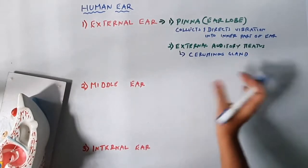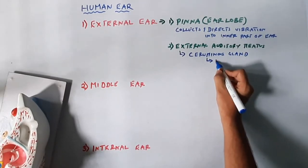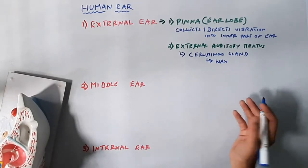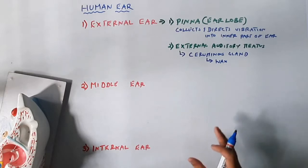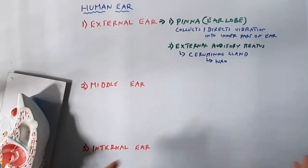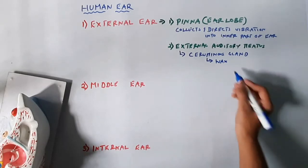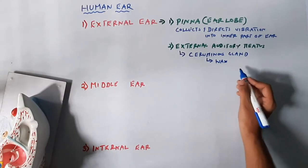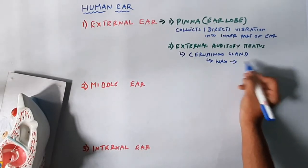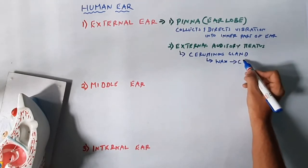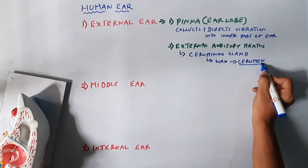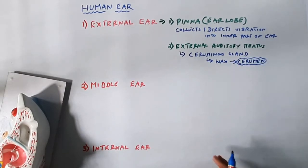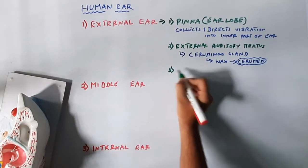Those glands are called ceruminous glands. The ceruminous glands produce ear wax, whose biological name is cerumen. The function of ear wax is protection — for example, if a tiny insect tries to enter the ear, the wax traps it, preventing it from reaching the inner ear.